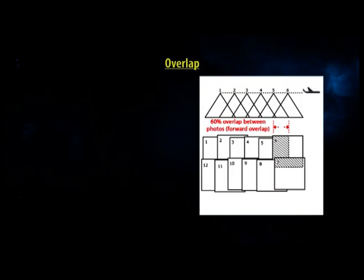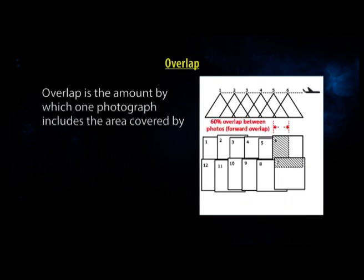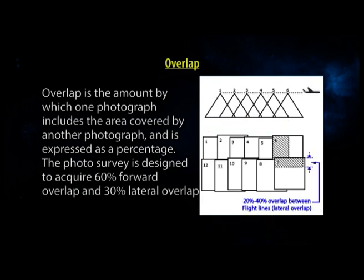Overlap is the amount by which one photograph includes the area covered by another, expressed as a percentage. The photo survey is designed to acquire 60% forward overlap between photos along the same flight line and 30% lateral overlap between photos on adjacent flight lines.